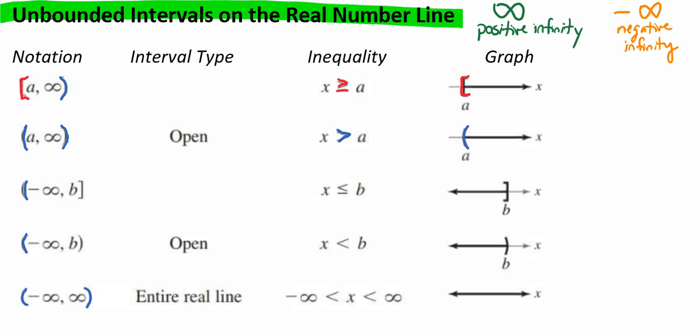In our next example, we have parentheses, negative infinity, comma, B, and a bracket. Because we have a parentheses and a bracket, that interval type is neither open nor closed. But here we can say that x will be less than or equal to B, so we'll use a bracket there.